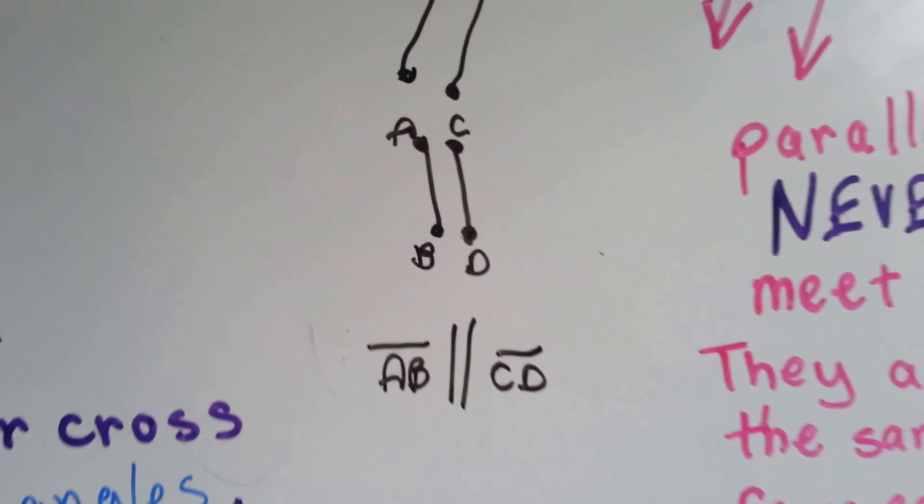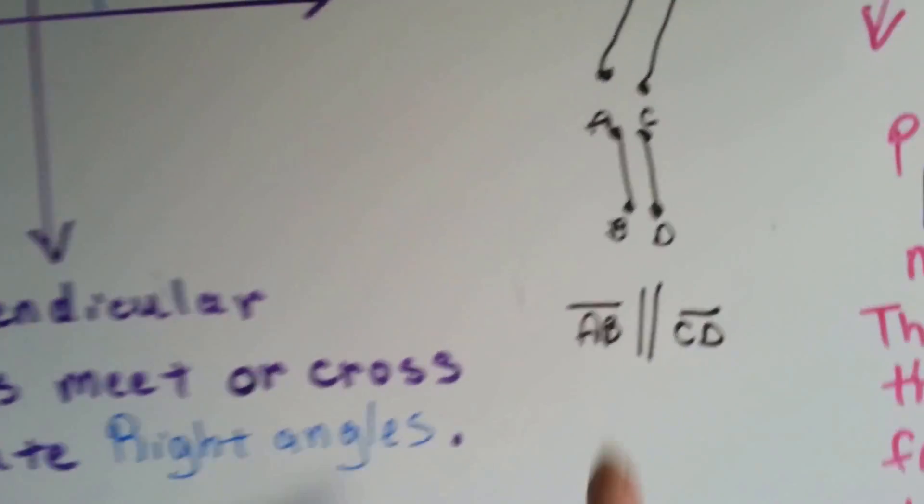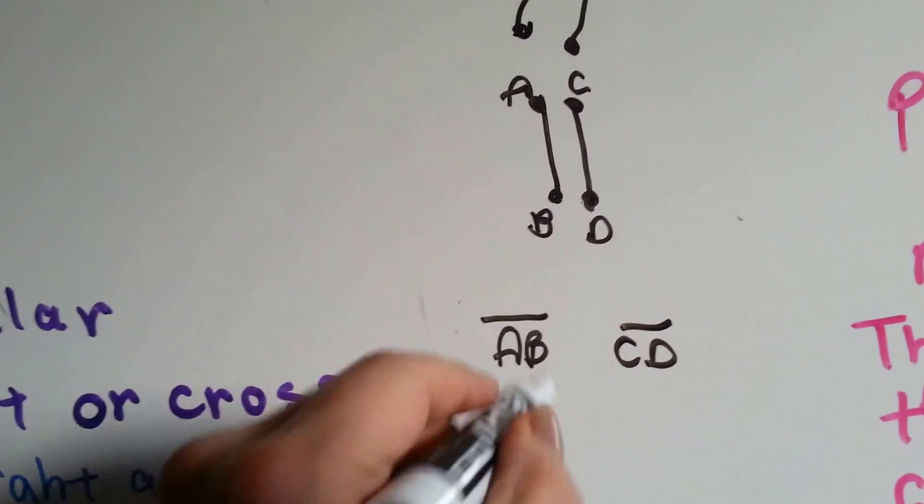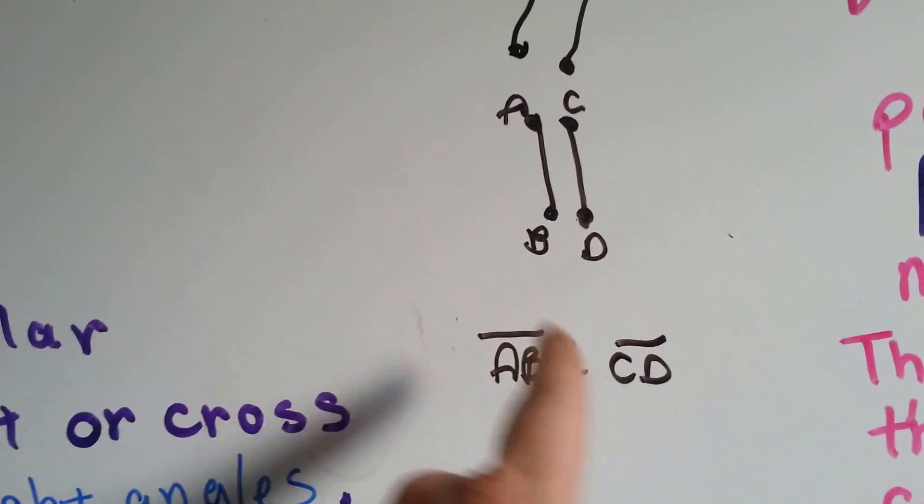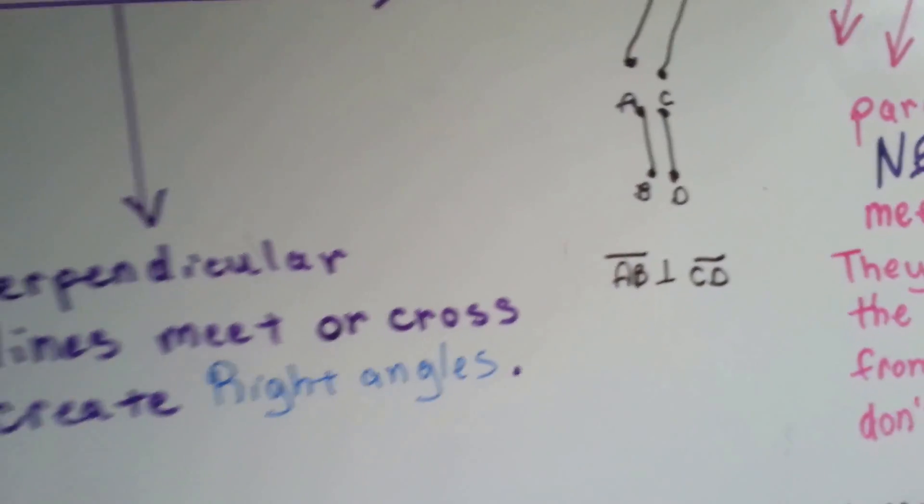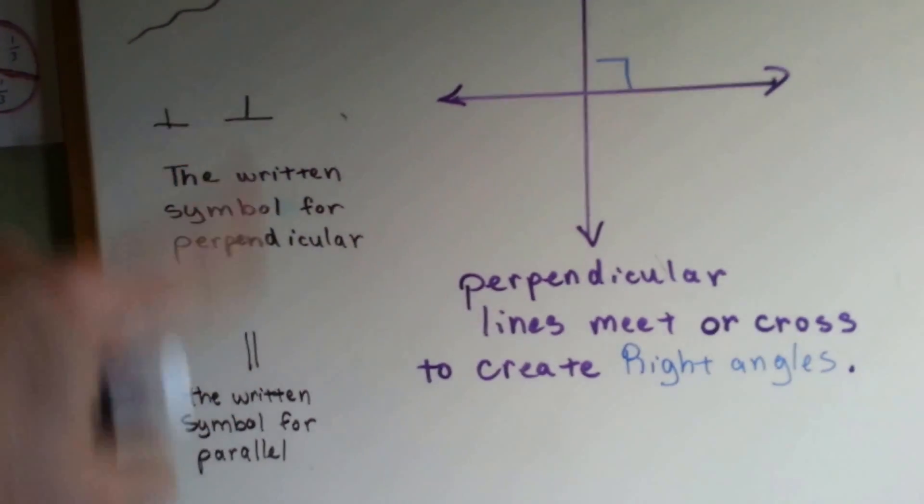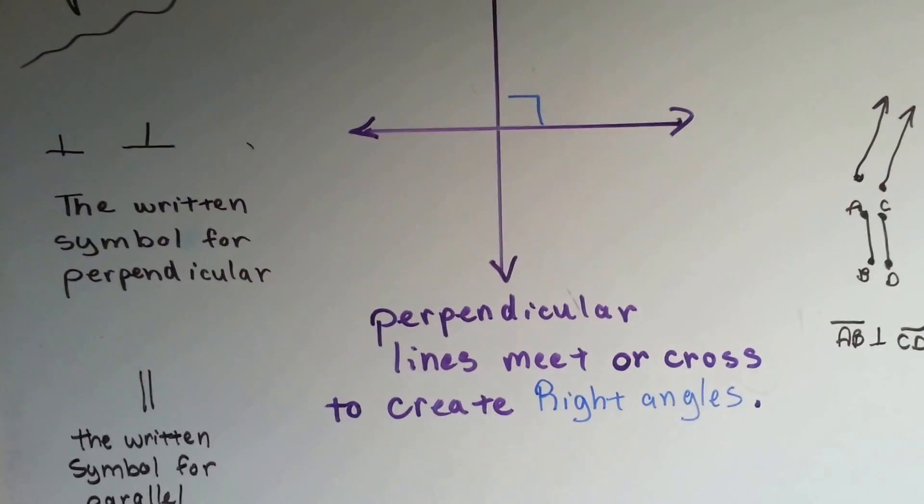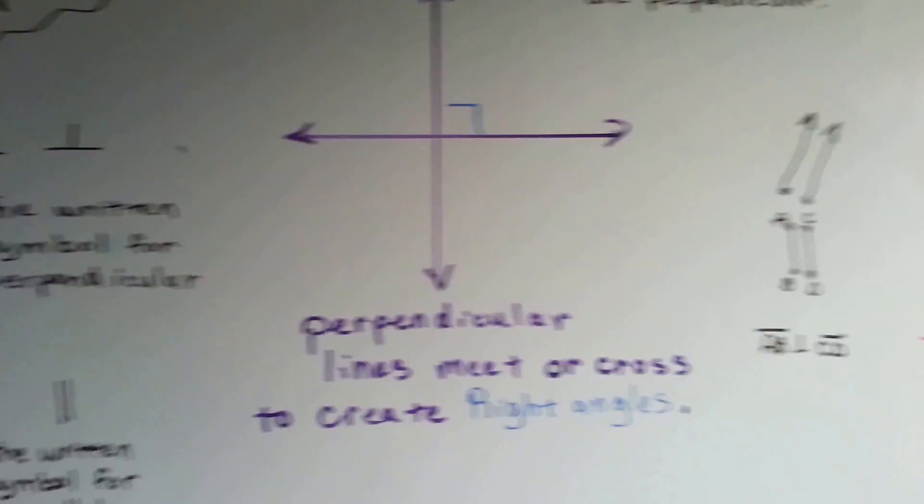If you wanted to say they were perpendicular, you would say that AB is perpendicular to CD. And they use these little symbols so that they don't have to write the whole word perpendicular or the whole word parallel.